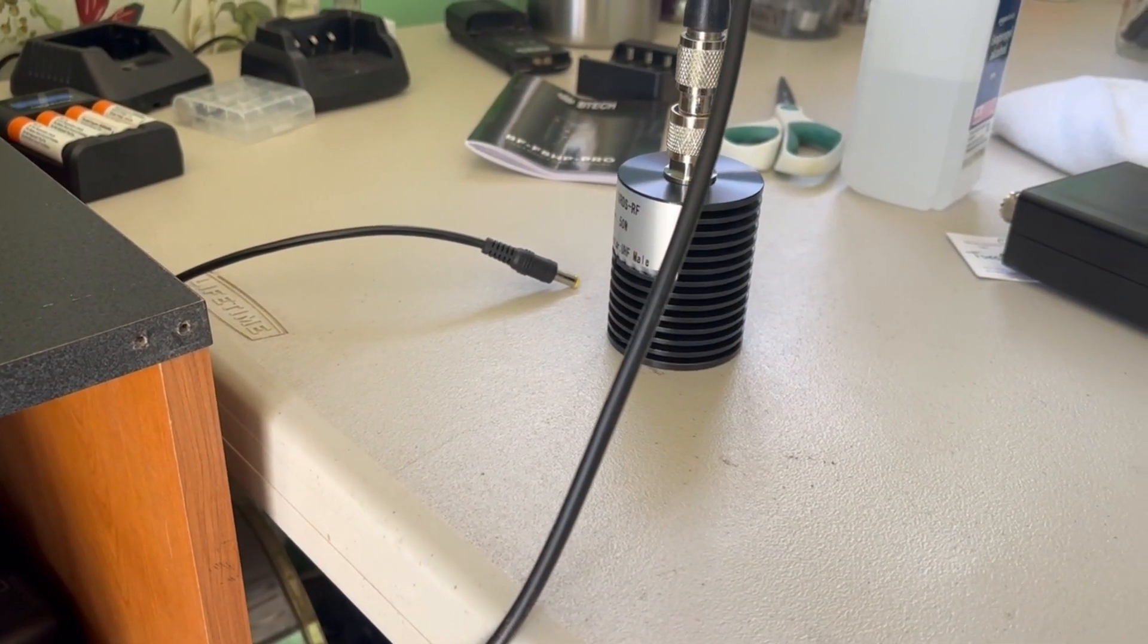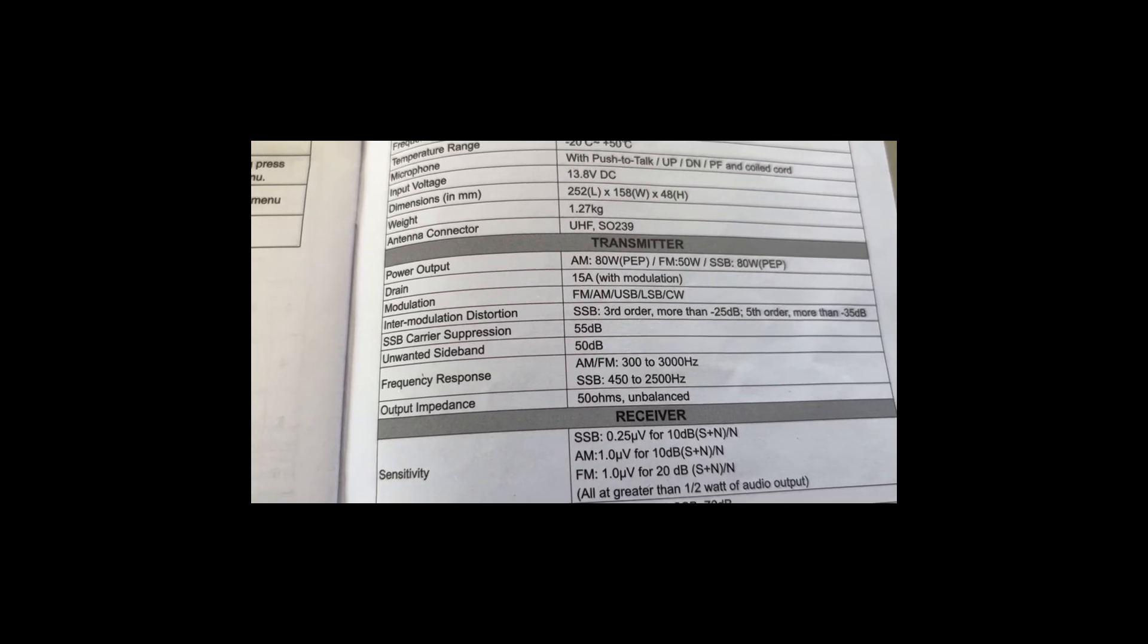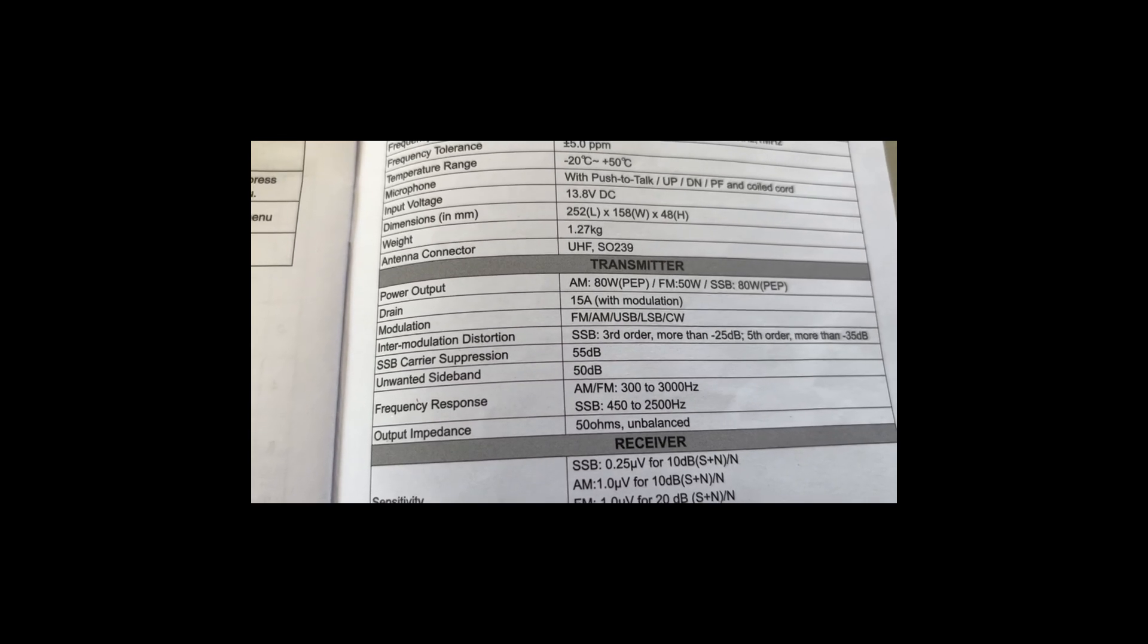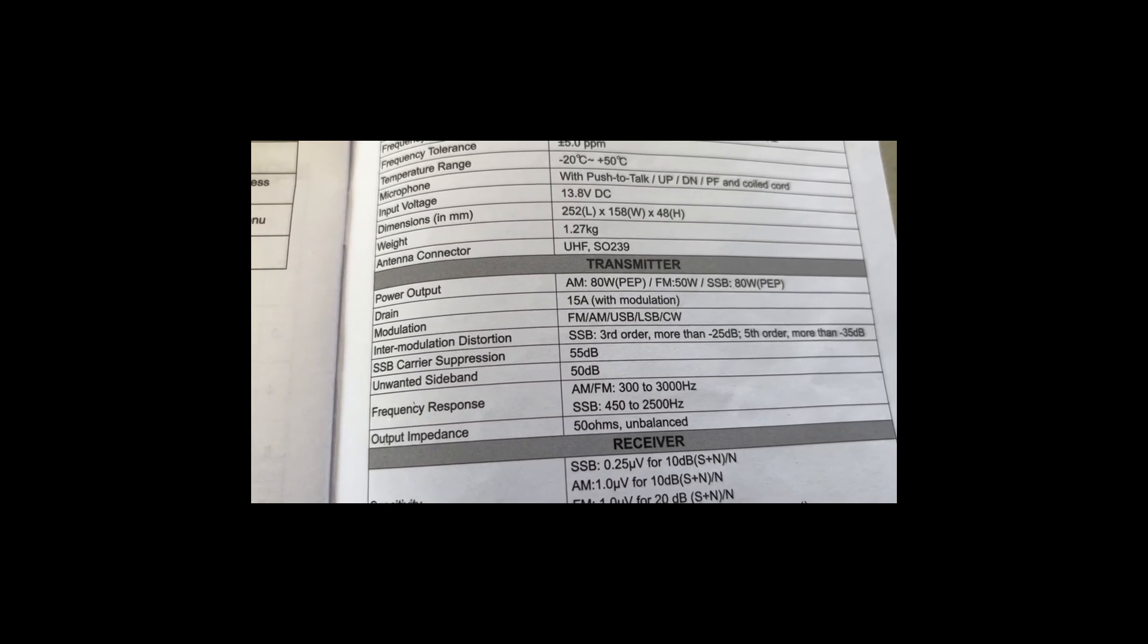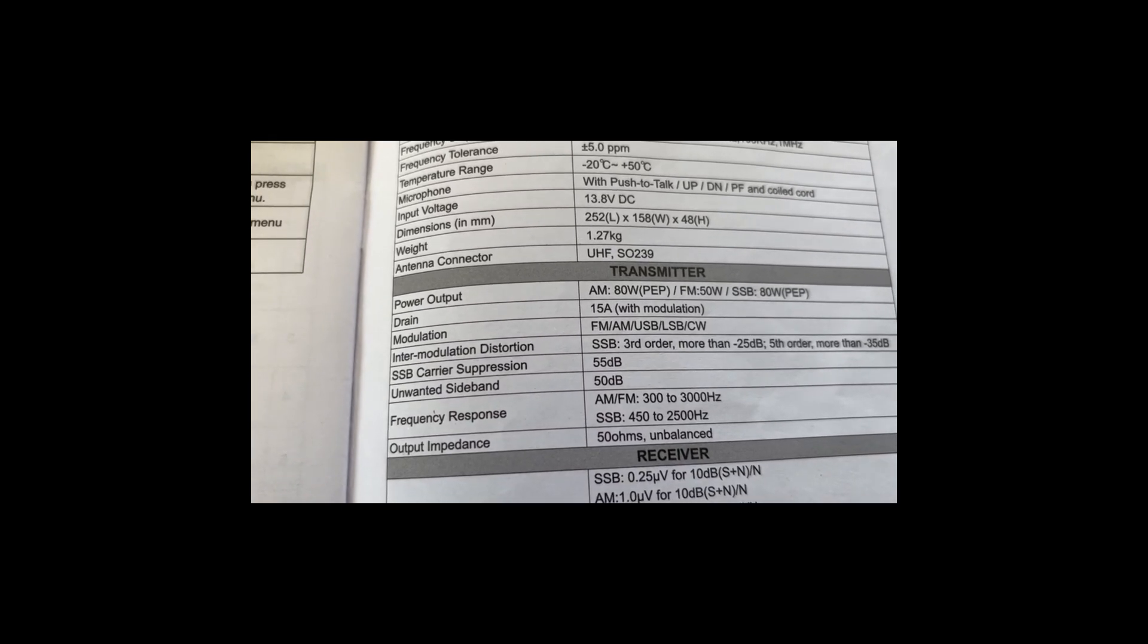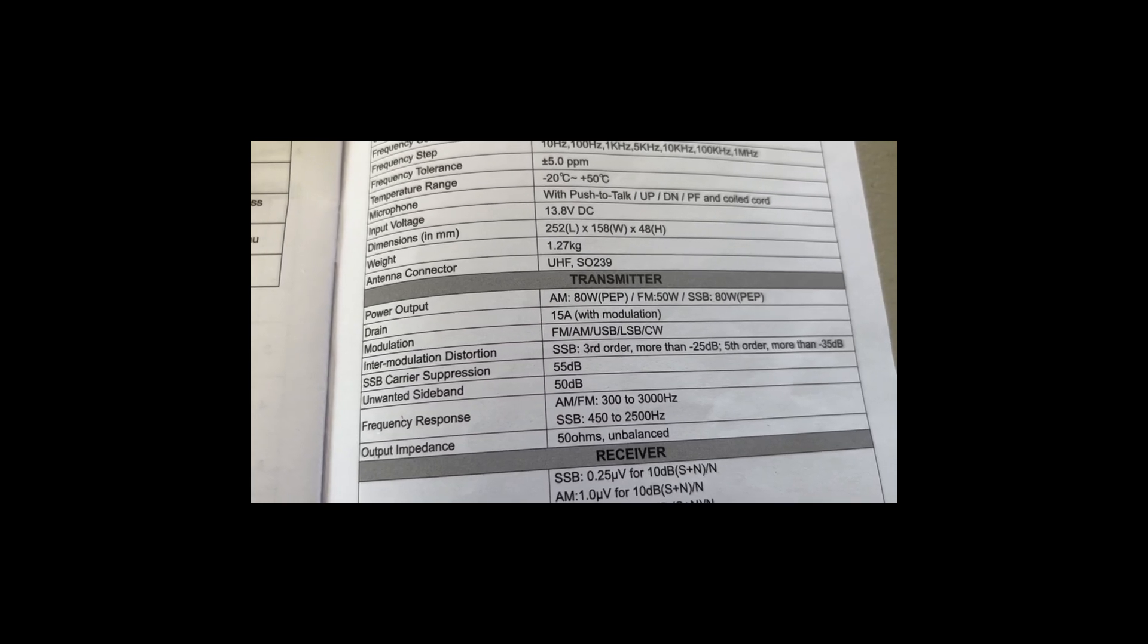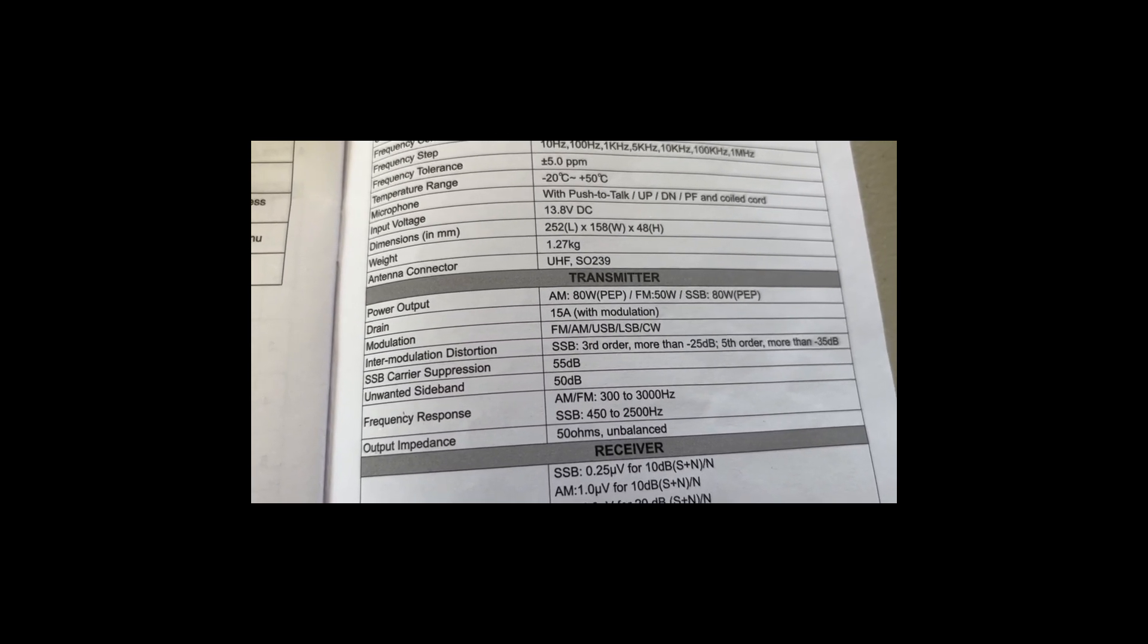Now according to the manual here, the power output is going to be around 80 watts AM PEP, FM is going to be around 50 watts, and sideband is going to be around 80 watts PEP.